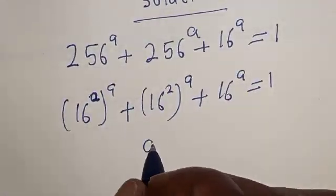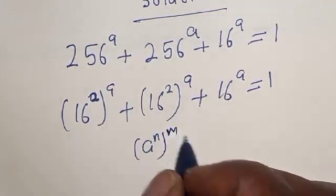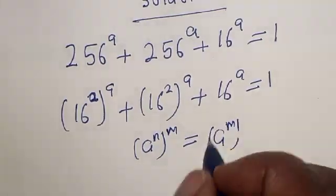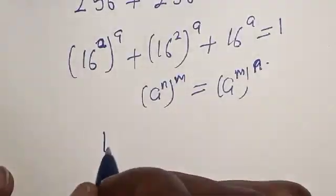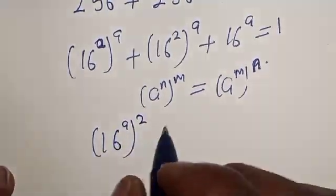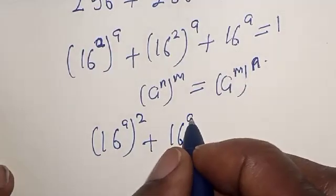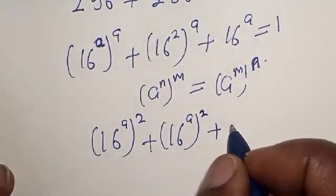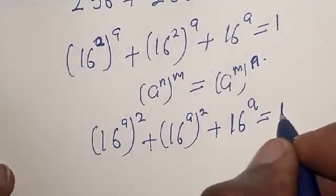Note that a raised to power n raised to power m is equal to a raised to power m raised to power n. So we can rewrite this as: 16 raised to power a squared plus 16 raised to power a squared plus 16 raised to power a is equal to 1.